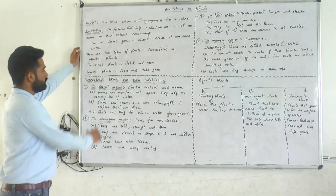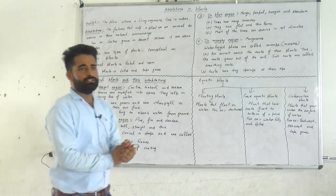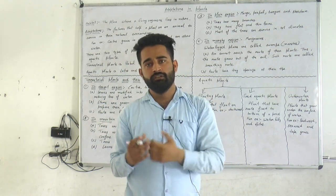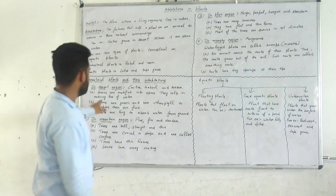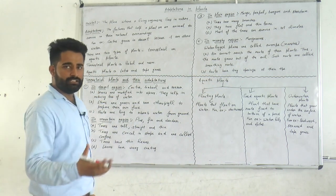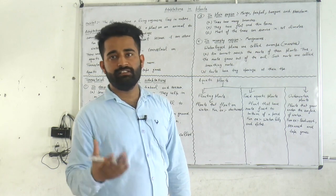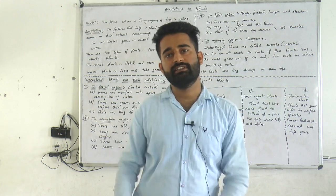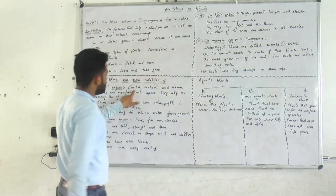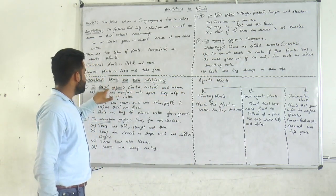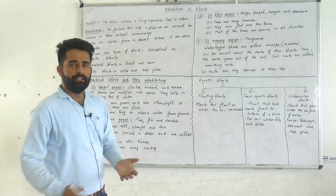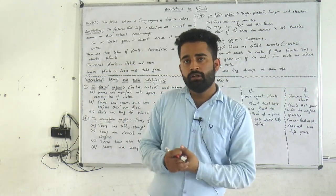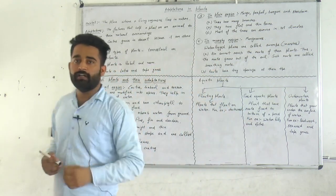Now let's discuss terrestrial plants and their adaptations — specifically, how plants survive in different regions. First, in the desert region: plants like cactus, babul, and khejri grow there. In the desert, temperature is very high, so plants must survive in hot climates. What kind of adaptations do they have?